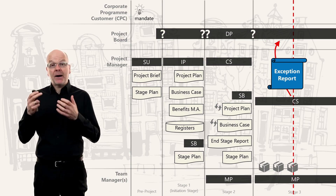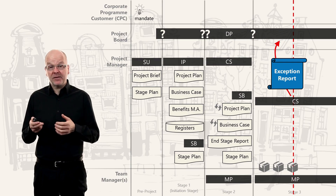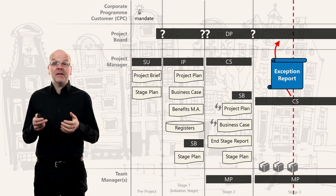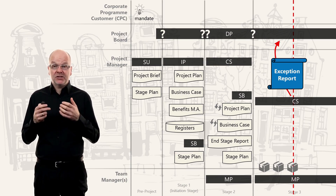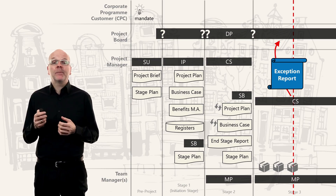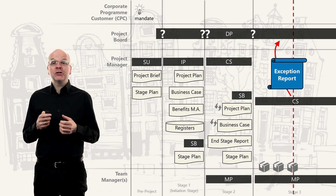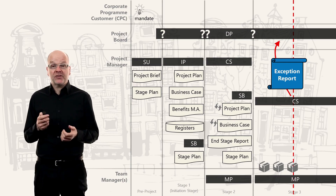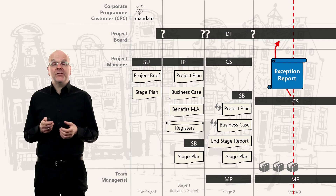This report is known as the exception report. It's like an issue report, but because it deals with an issue that brings the stage out of tolerance, it's called an exception report. It provides all the information needed for a good overview of the impact on the project and how we can deal with it. This report is then escalated to the project board.